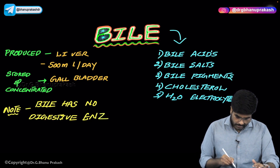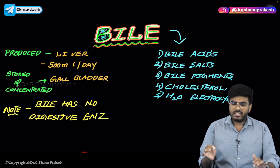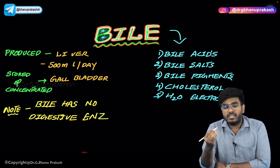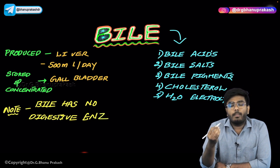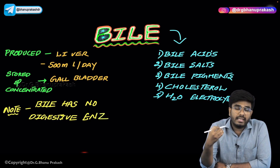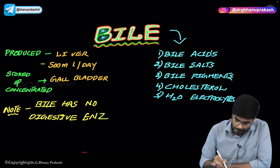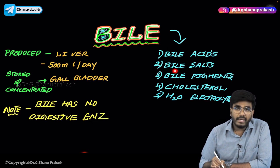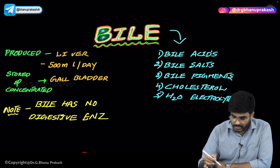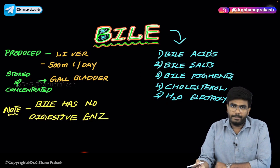Welcome back. In this video, let's discuss about bile. They can ask you in the exam something like: all of the following substances are present in the bile except. So, bile is synthesized in the liver and it consists of bile acids, bile salts, bile pigments, cholesterol, water, and electrolytes. All these things are present inside the bile.